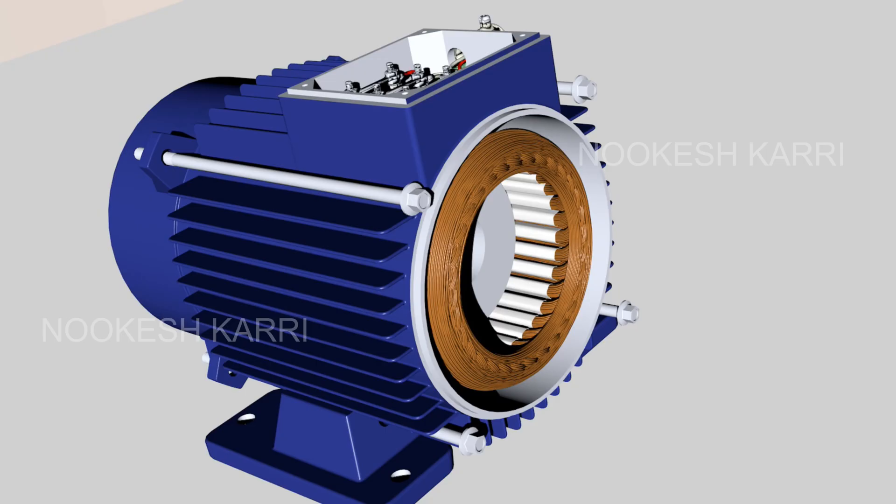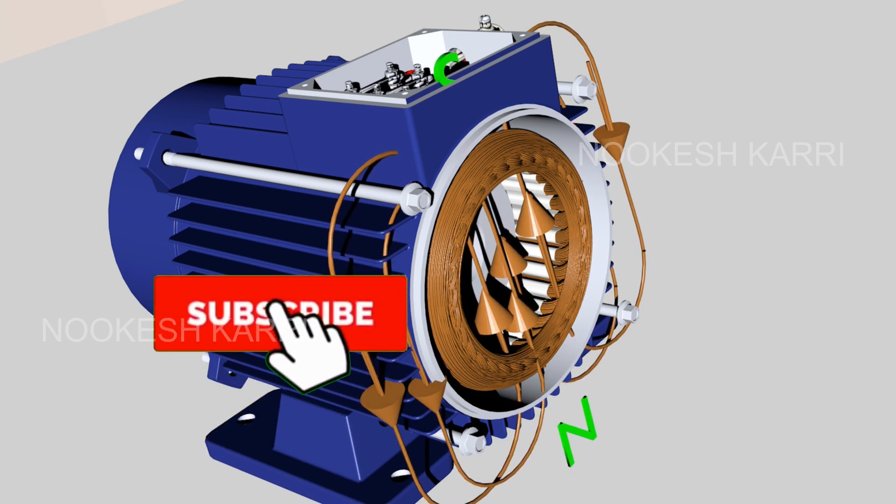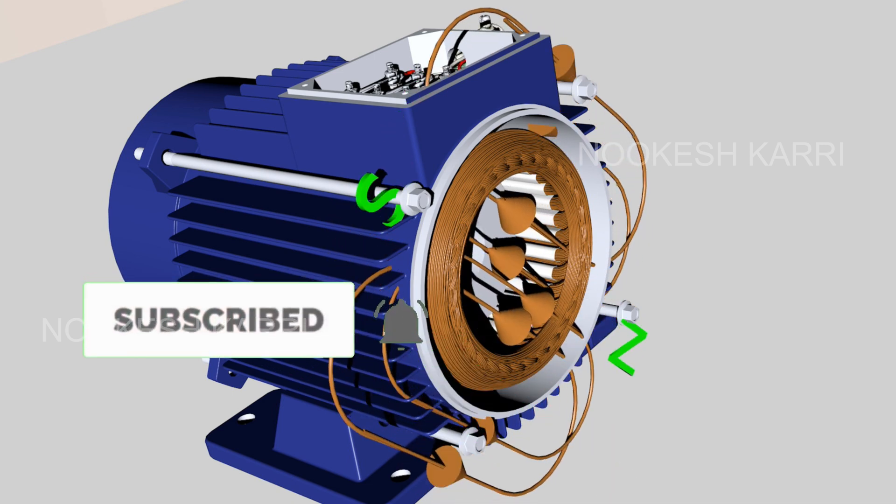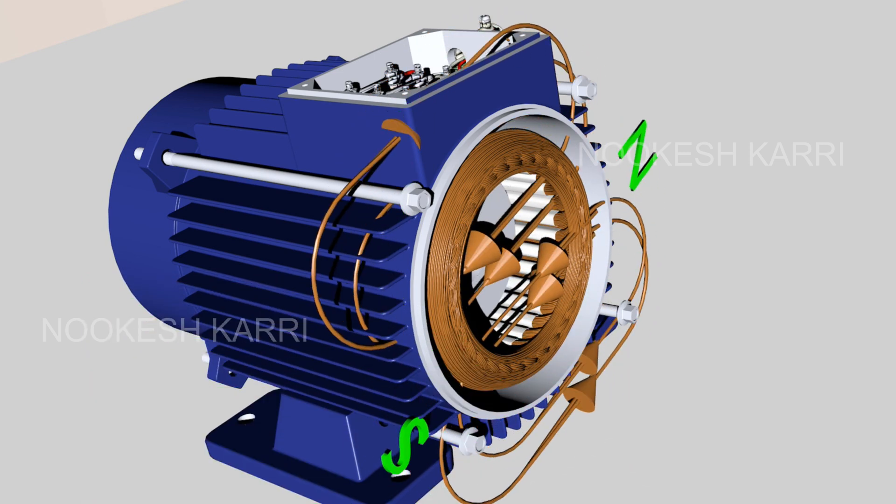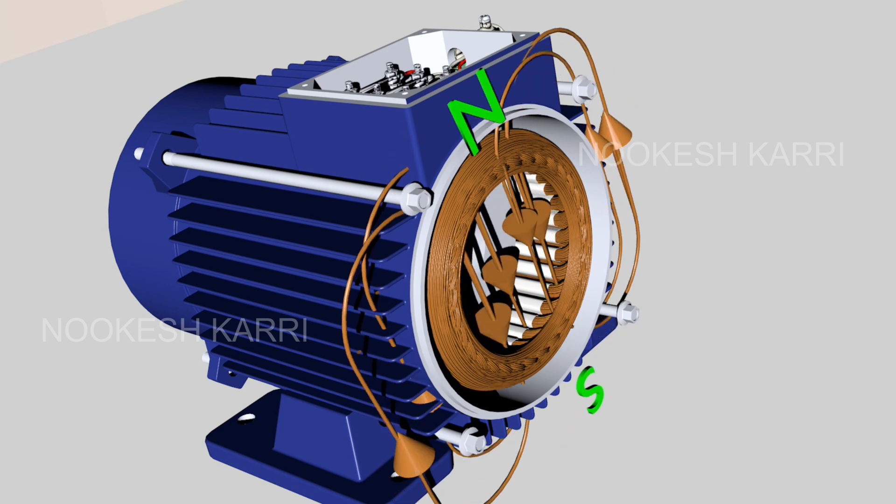Working principle. The induction motor is a single excited motor. Therefore, it needs only one source of supply, and the three-phase AC supply is given to the stator winding. When a stator winding is energized by a three-phase supply, the rotating magnetic field is induced inside the stator conductors. The motor works on the principle of Faraday's law of electromagnetic induction.